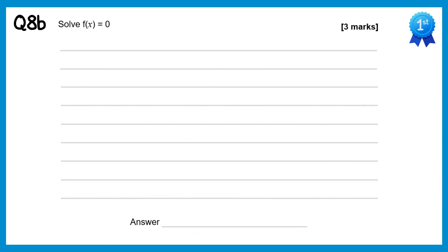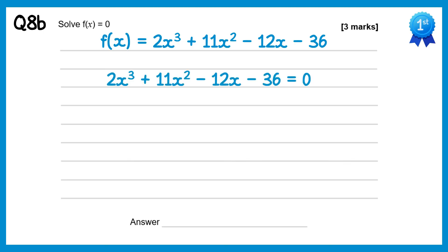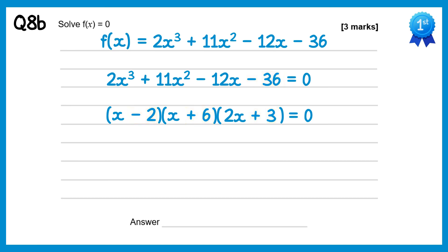For part b we need to solve f of x equals 0, remembering we now know the values of a and b. So the function is 2x cubed plus 11x squared minus 12x minus 36 equals 0. We already know two of the factors: x minus 2 and x plus 6. There must be one more factor. We don't need long division — since the first terms of each bracket multiplied together must give 2x cubed, x times x times the unknown must give 2x cubed, so x times x is x squared meaning we need 2x. Similarly, the final terms multiplied must give negative 36: negative 2 times positive 6 times the unknown gives negative 36, and negative 2 times 6 is negative 12, so we need positive 3. The solutions are: x equals 2 from the first bracket, x equals negative 6, and x equals negative 3 over 2.